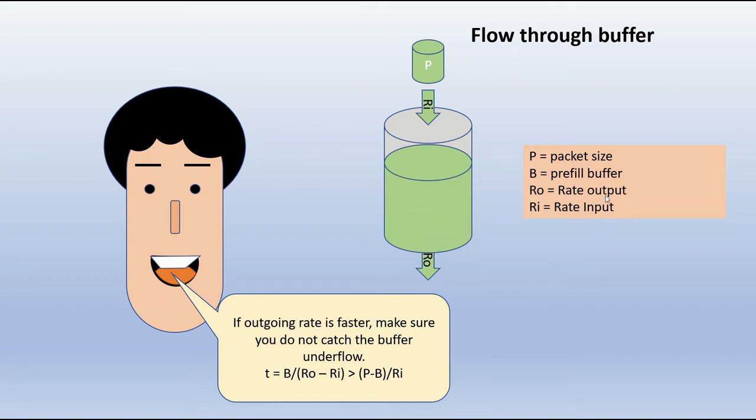Ro minus Ri is the rate at which this is trying to catch up. So if this pre-fill over (Ro - Ri) is always greater than the packet size minus the pre-fill—which is the amount of data still to come into the buffer at the rate Ri—if so, (P - B) is still to come into the buffer at rate Ri.